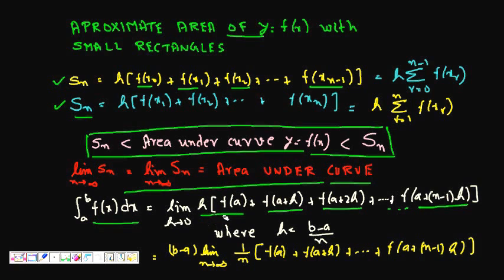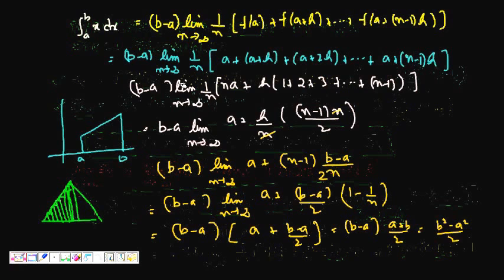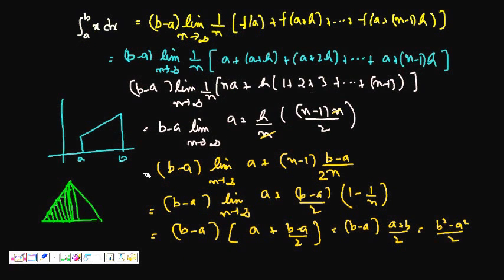We can rewrite this as: (b − a) · lim(n→∞) (1/n)·[f(a) + f(a+h) + ... + f(a+(n−1)h)]. This gives us the area under the curve, and we can take a simple example to verify it.